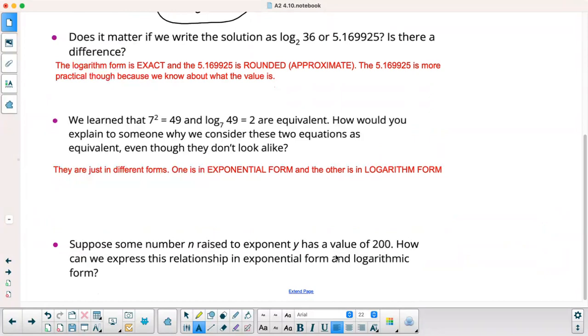Suppose some number n raised to exponent y has a value of 200. I'm going to write that out. n to the y equals 200. How can we express this in exponential form? There is exponential form and then log form would be log base n of 200 equals y.